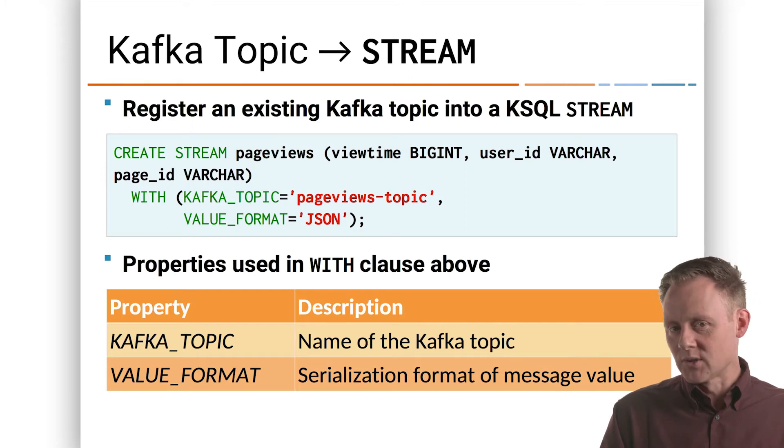Then the extension stuff, we say with, and give it in parentheses, a comma separated key value pair list. There are two things that we need to say. One is the Kafka topic, which in this case is going to be a topic called page views topic. What that means is we're assuming that topic exists. There's a topic in our cluster that we're connected to called page views topic. And the stream page views that we're creating is an abstraction on top of that topic. Page views is going to contain the data in page views topic. That's all there is to it.